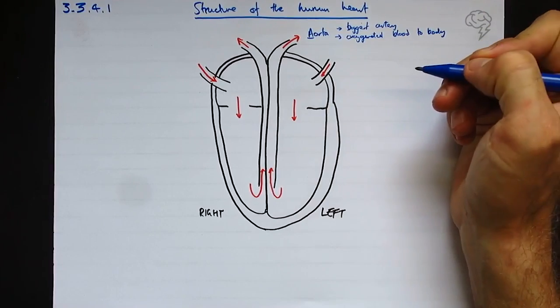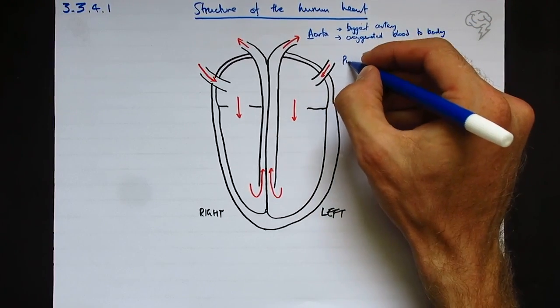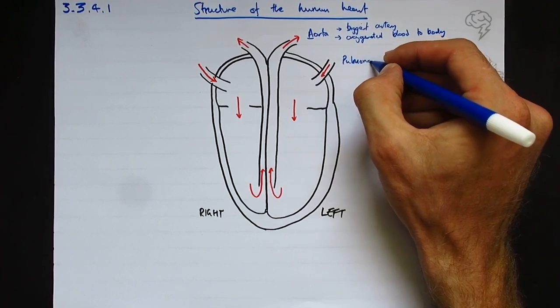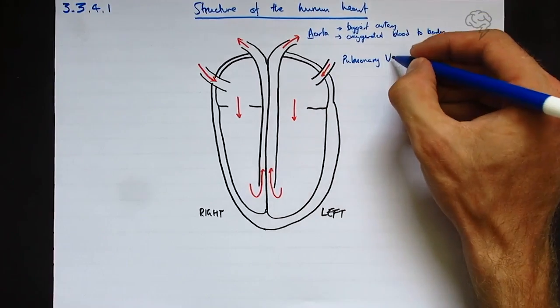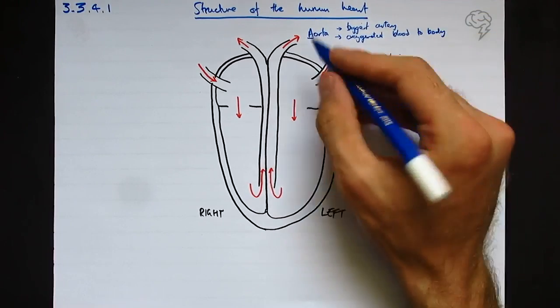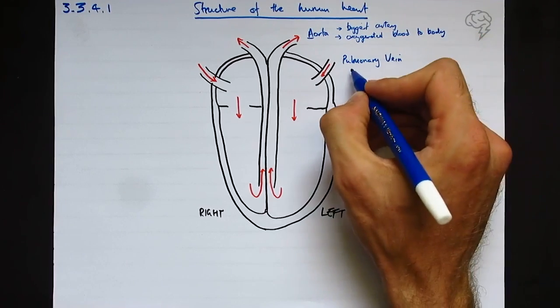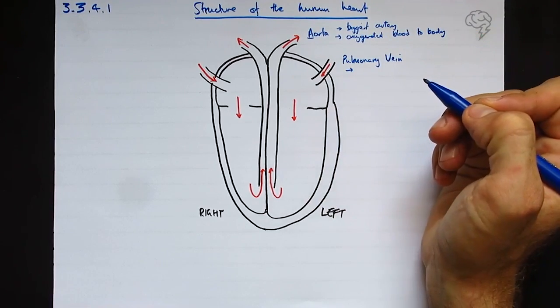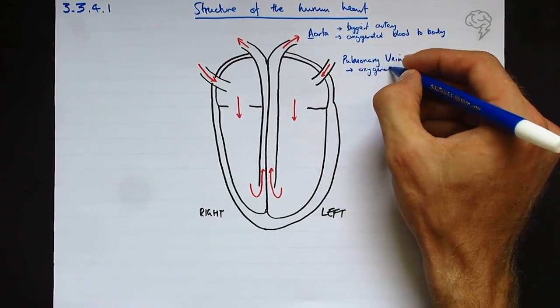This one coming back from the lungs - anything lung related is pulmonary. So pulmonary, and it's coming back to the heart. Any blood vessel flowing back to the heart is a vein. So this is actually oxygenated blood in a vein, which is a little bit unusual. This is why you can't say that all veins are deoxygenated. This is the exception, so it carries oxygenated blood from the lungs.